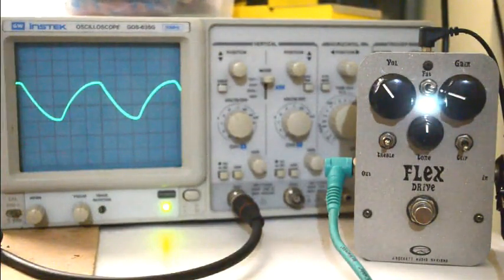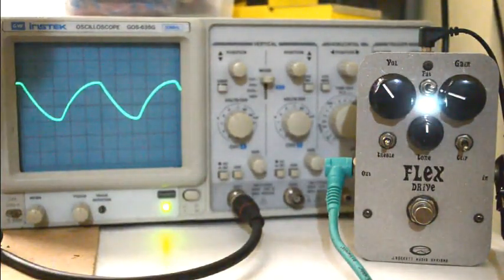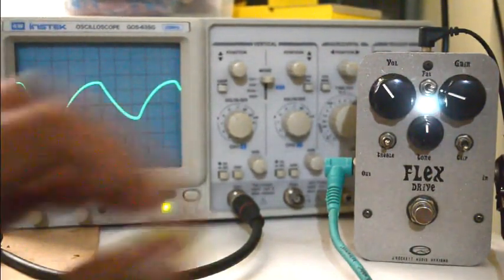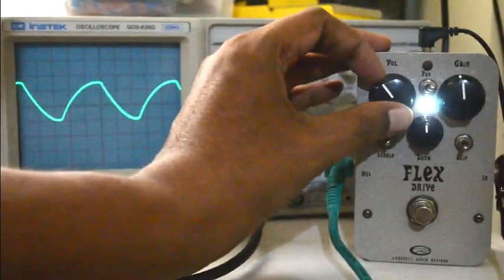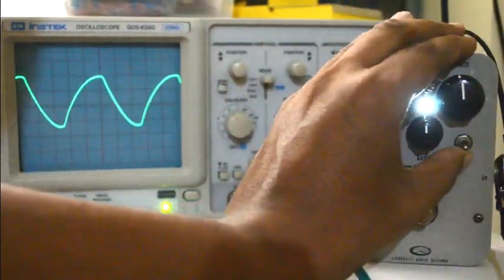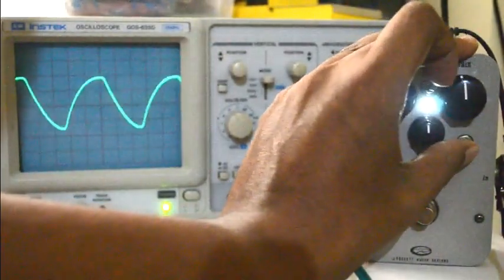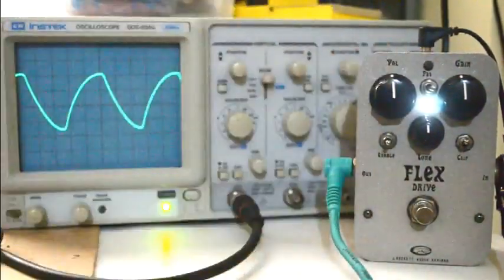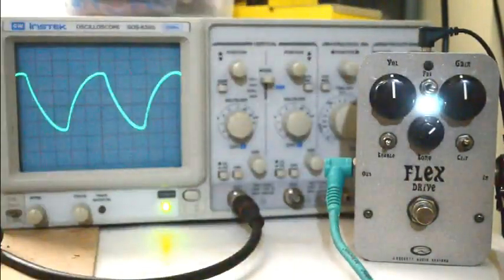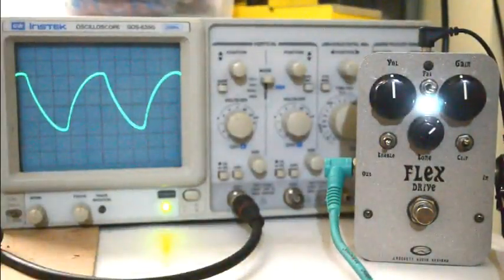So that's how the Flex Drive looks on the scope. My favorite setting on the Flex Drive is both roundabout here, and with the clipping in the top position, no treble cut, and I like to keep the tone control somewhere around here. That's what I like on the Flex Drive.